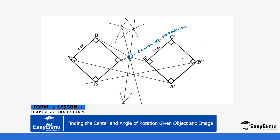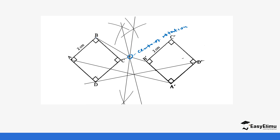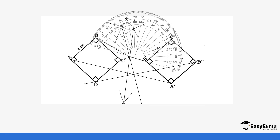Once you have the center of rotation, pick a pair — for example, B and B prime. Draw a line from B to the center, and from B prime to the center using a ruler. Now place your protractor at the center so you can measure the angle between the line to B and the line to B prime. The angle you get will be the angle of rotation — in this case, 170 degrees.